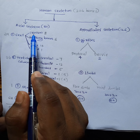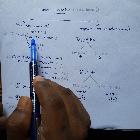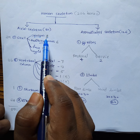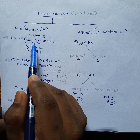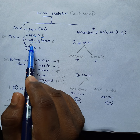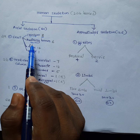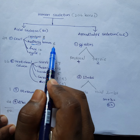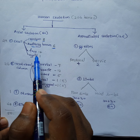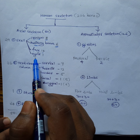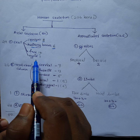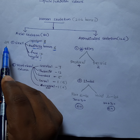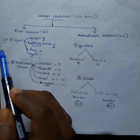In the skull, there are different types of bones. There will be cranium bones — the number of cranium bones will be eight. Then there will be auditory bones: in one ear there will be three auditory bones, and in the other ear another three, so total six bones. In the face there will be 14 bones, and there is an additional hyoid bone. So total there will be 29 bones in the skull.